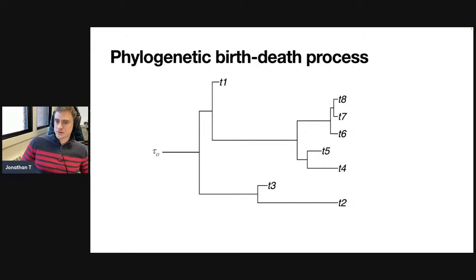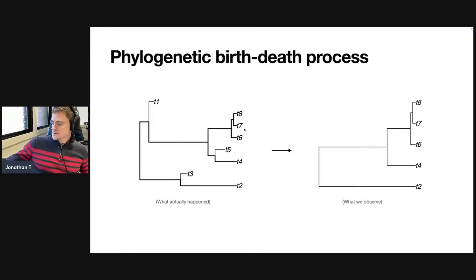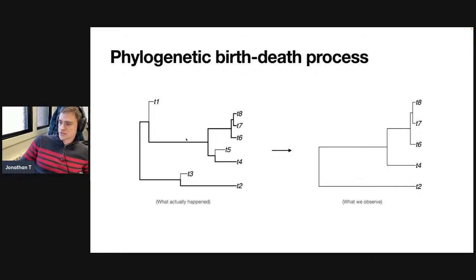Then we come along at the present and sample some data. Assuming we sampled all surviving leaves — t2, t4, t6, t7, and t8 — we can see the phylogeny of these five lineages embedded in the overall tree structure. But the important point is that some lineages in the true tree were not actually present in my sample. I don't see parts of the tree — lineages that went extinct are simply not observed, by definition, if I'm looking at the present.